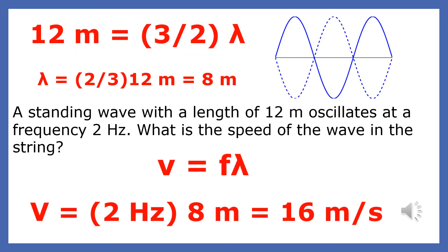A standing wave with a length of 12 meters oscillates at a frequency of 2 Hz. What is the speed of the wave in the string? In order to find the speed of the wave, we need to find the wavelength. Since one and a half waves are shown here and they're 12 meters wide, this means that the wavelength is 8 meters.